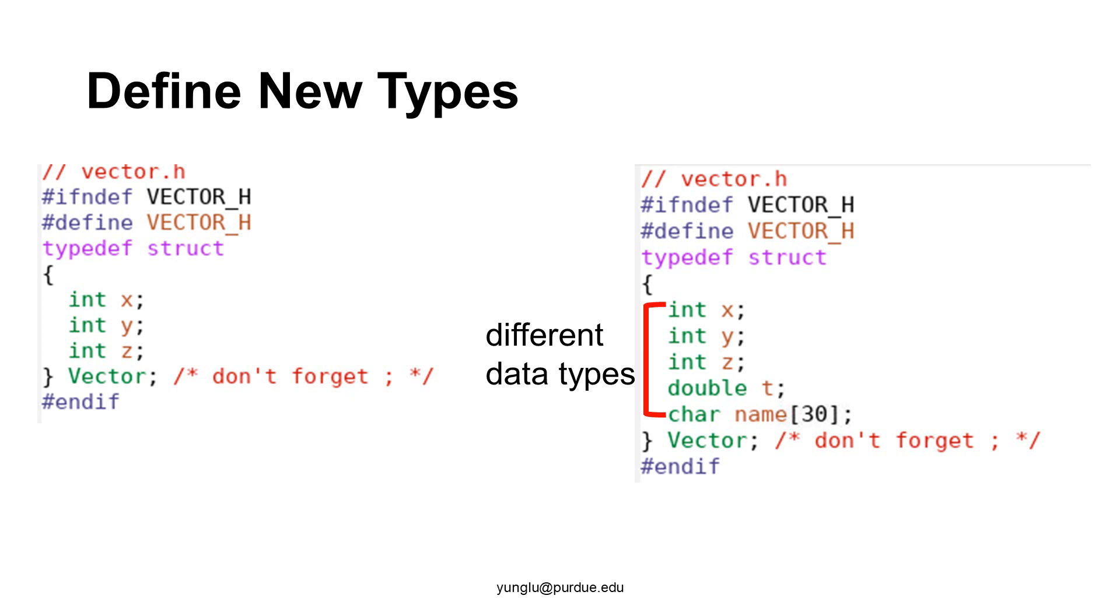Usually, a new data type has its own header file. This vector structure has a header file called vector.h. In the second example on the right side, we can see that the attributes may have different data types. The first three attributes x, y, and z are integers. The next attribute t is double. The last attribute name is an array of 30 characters.